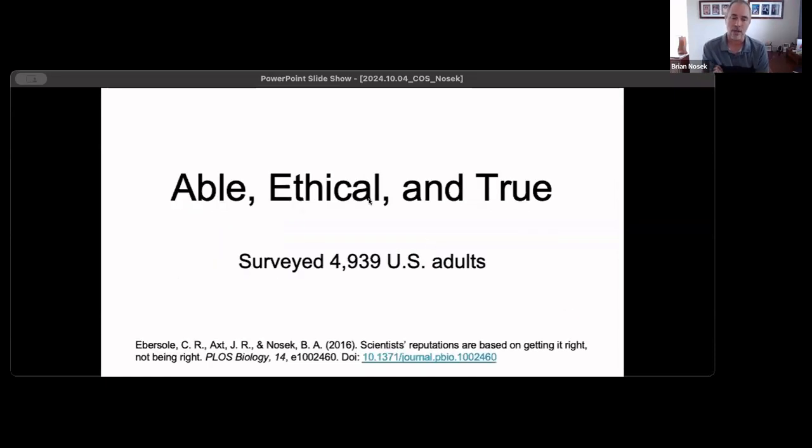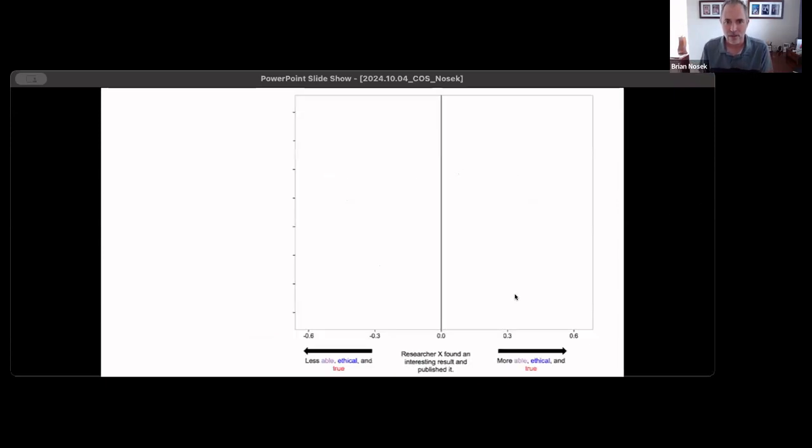The data I want to talk about comes from a survey that I did with Jordan Axt and Charlie Ebersole, where we surveyed U.S. adults on a variety of scenarios about here's a behavior that a researcher did. Tell us how much you think they have ability to do research, how ethical do you think they are in their research, and how true do you think their findings are? What you see in the middle, this dark line, is the response on average for the respondents when they were given a very simple scenario: Researcher X found an interesting result and published it.